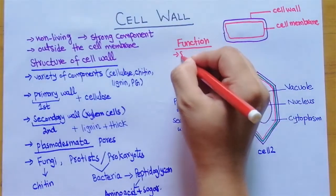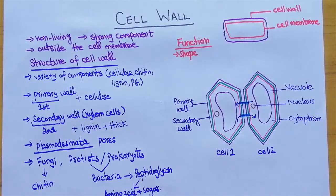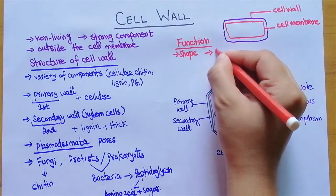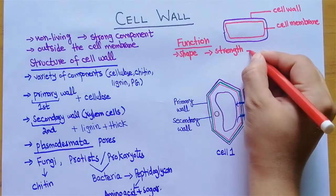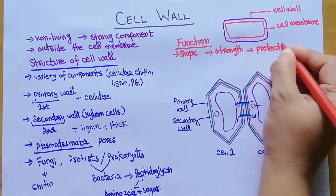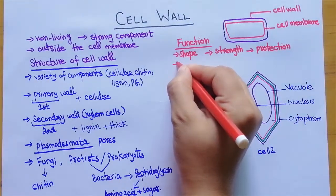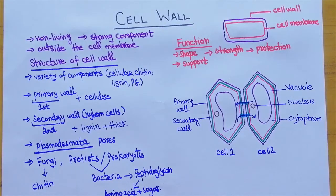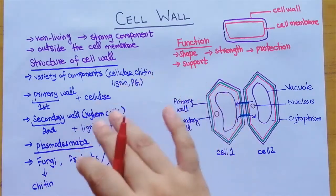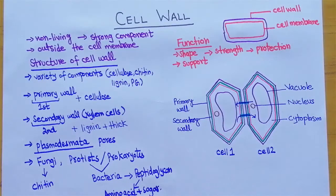Now, the functions of cell wall. First, cell wall provides shape — plants have a defined, definite shape, while animals are irregular in shape because of the absence of a cell wall. Second, cell wall provides cells with strength. Third, it protects the cells from external injuries. Fourth, it supports the cell — we can see tall trees and tall plants standing without any external support because the cell wall in their cells is providing them with support.